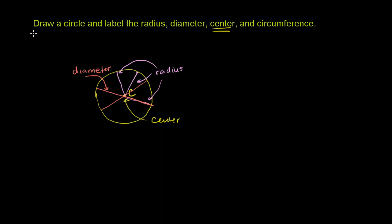And then finally, we have to think about the circumference. The circumference is really just how far you have to go to go around the circle. Or if you put a string on this circle, how long would that string have to be?